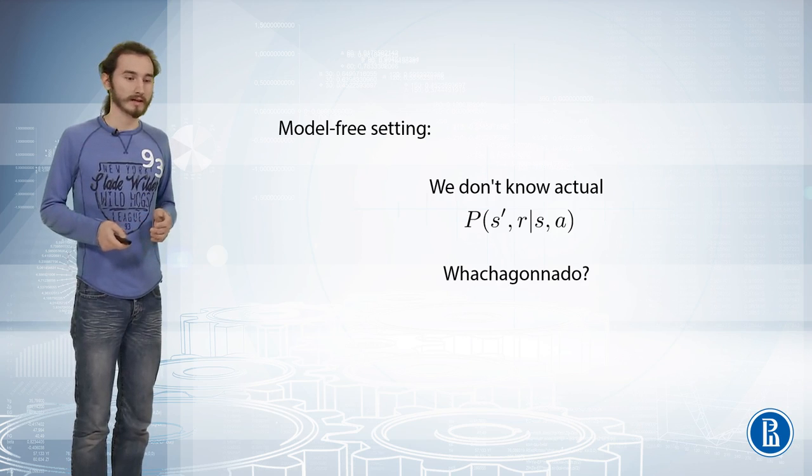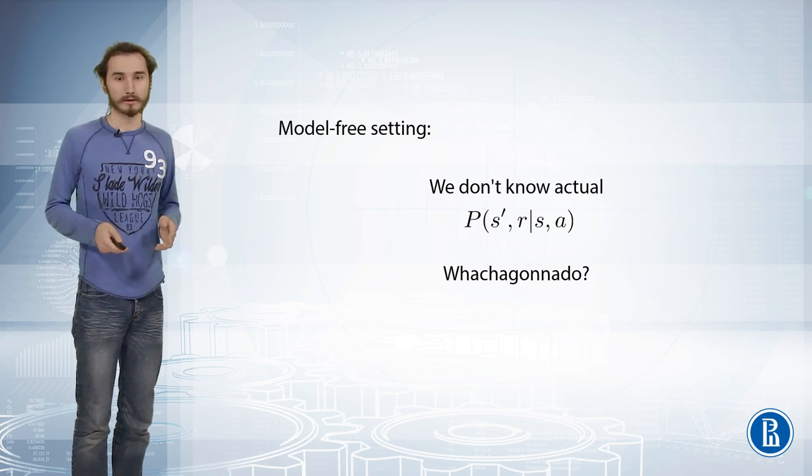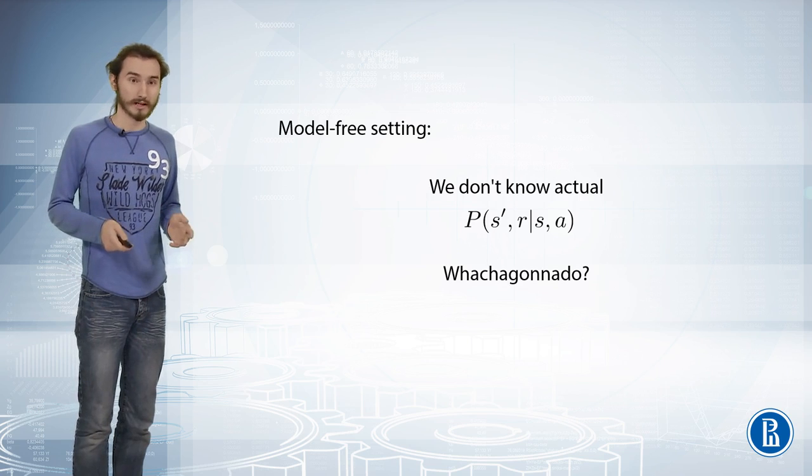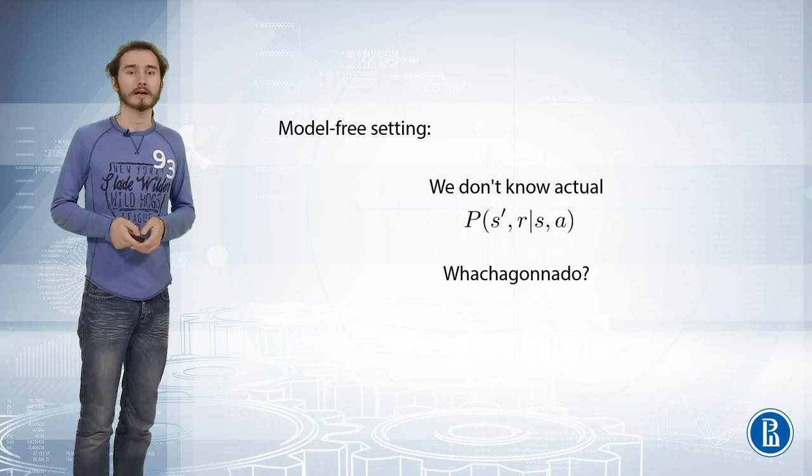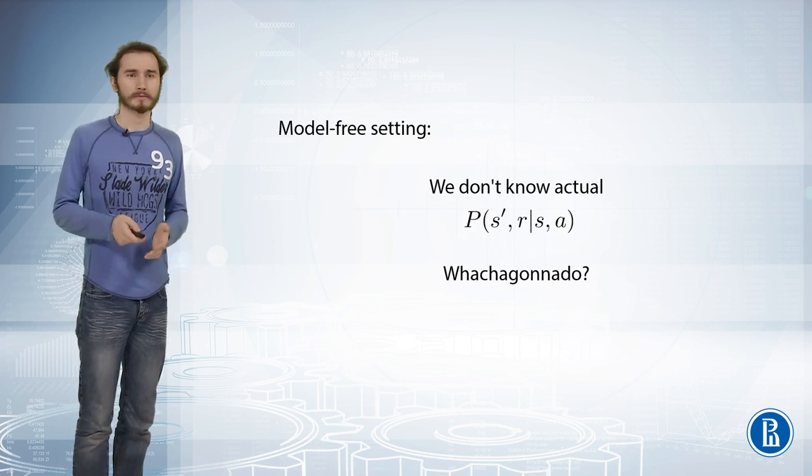So in this case, of course, you cannot simply compute the expectation of, say, action values with respect to possible outcomes, and this prevents you from both training and using your optimal policy given the value function. So what are you going to do to approach this problem? Is there any trick of the trade from machine learning that you do when you don't know a probability distribution?